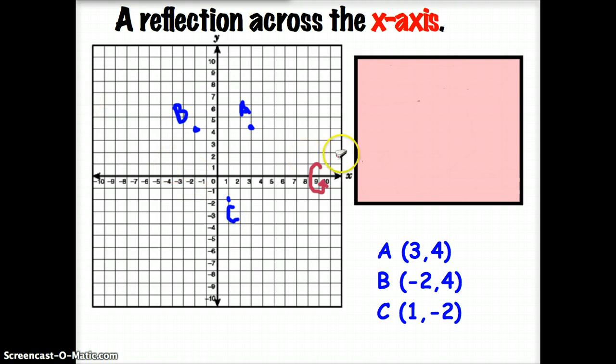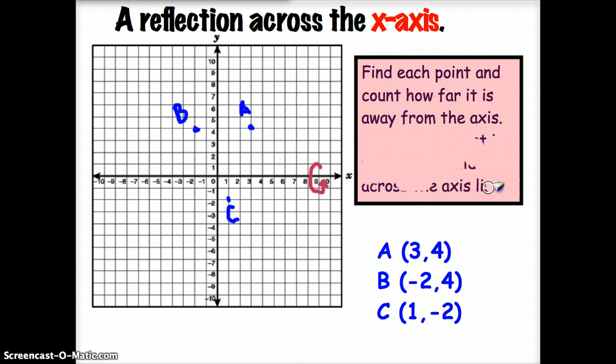To reflect an object over the x-axis, you're going to first graph each ordered pair. Then you're going to find how far each ordered pair is from the axis of reflection. The new point is going to go on the opposite side across the axis listed. So let's connect these ordered pairs first. Again, we're reflecting around our x-axis.